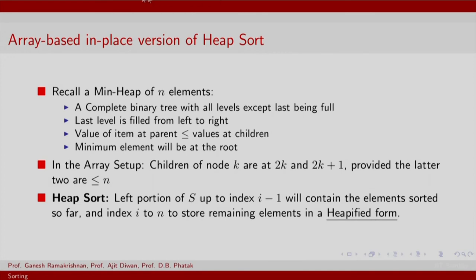All of this is happening within a single array. Formally, a min heap of n elements is a complete binary tree with all levels except the last one being filled. The last level is filled from left to right. The value of an item at a parent is less than or equal to the values at its children, and the minimum element is at the root. In the array setup, the children of node k are at positions 2k and 2k+1, provided those indices are less than or equal to n. If not, one child may be empty, which is why the last level need not be completely filled.